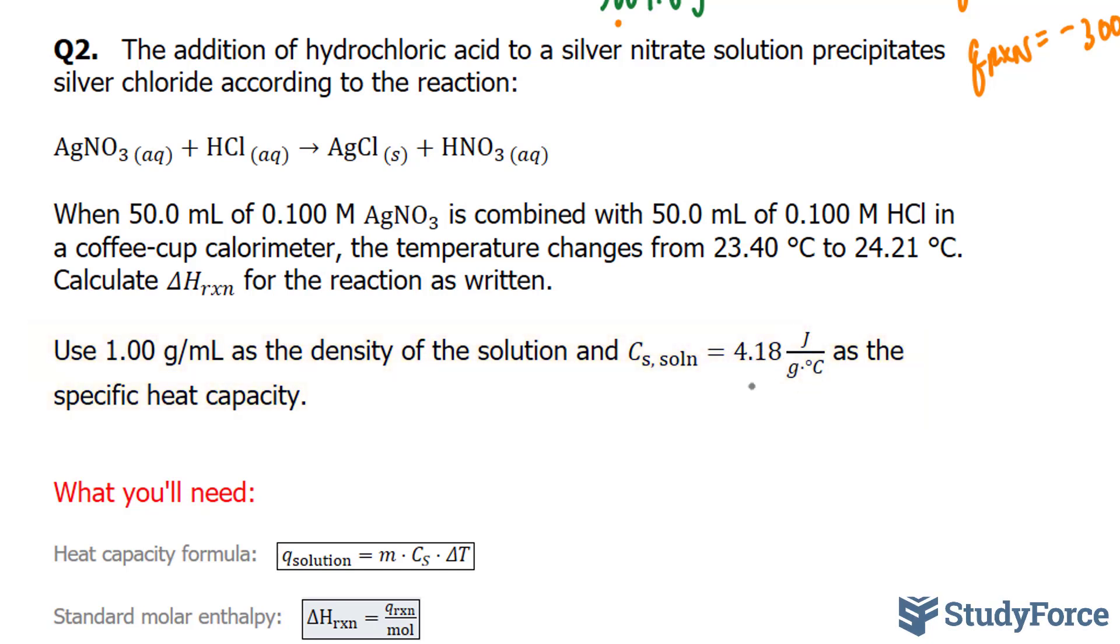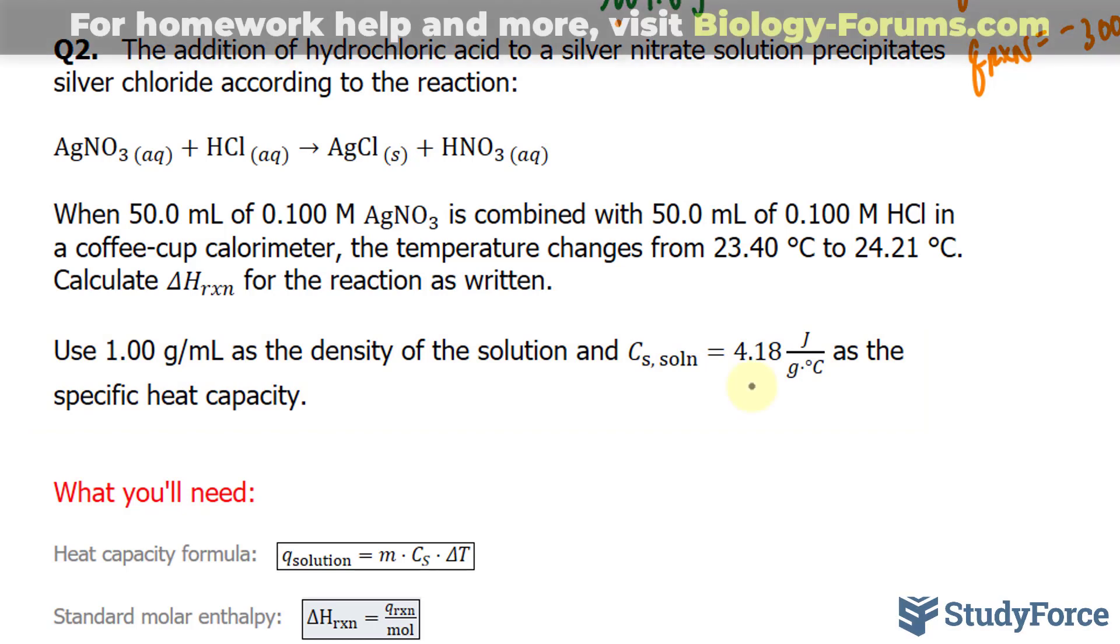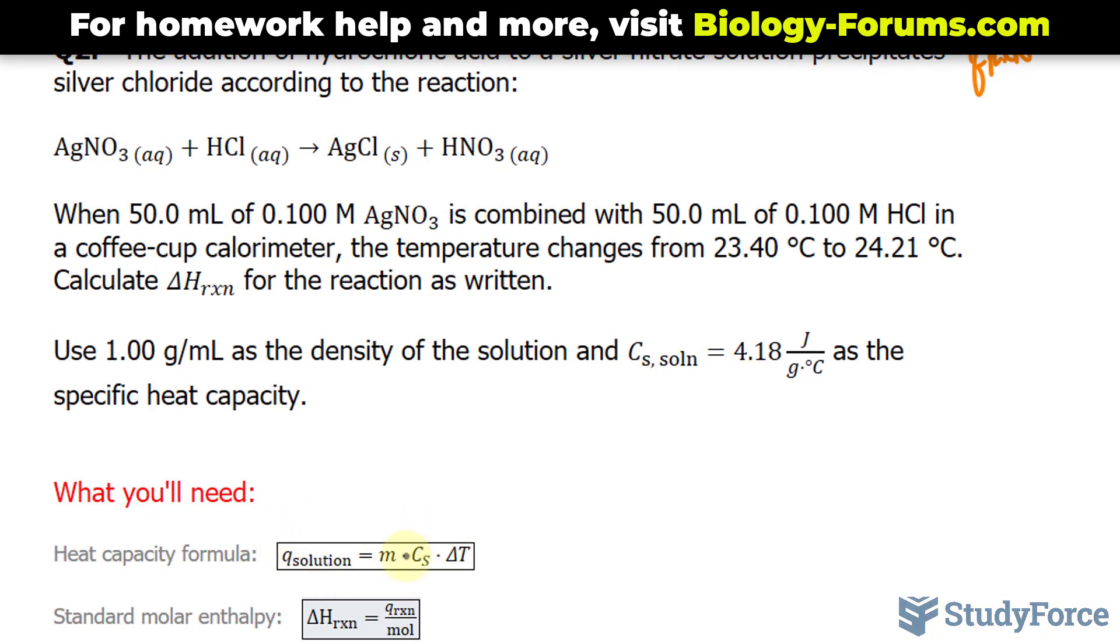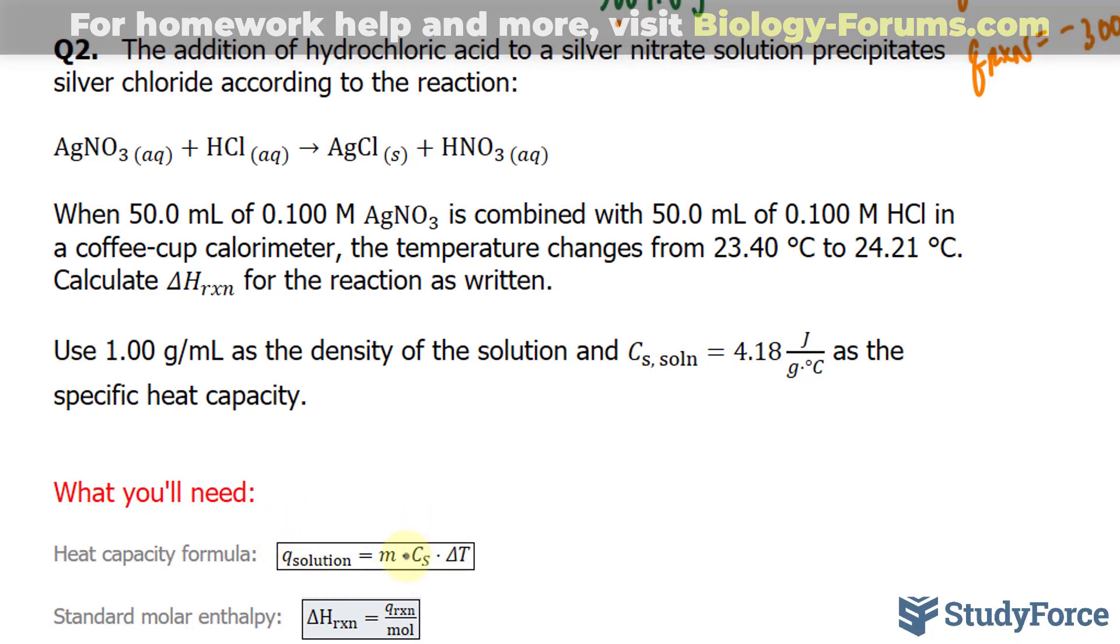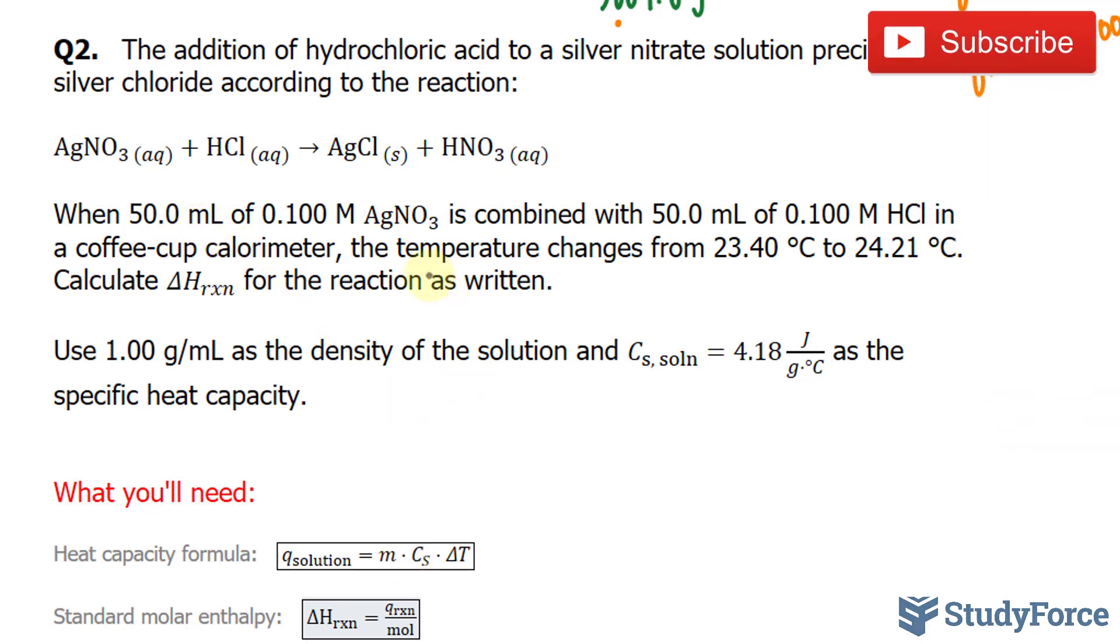We need to use 1.00 grams per milliliter as the density and the specific heat capacity shown here. To do this question successfully, the first thing we have to do is find the heat capacity of the solution using this formula. The solution is composed of 50 milliliters of AgNO3 and 50 milliliters of HCl, so we add 50.0 plus 50.0 to get a total volume of 100.0 milliliters.